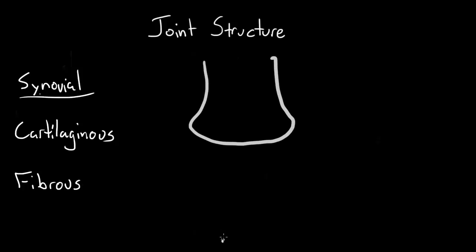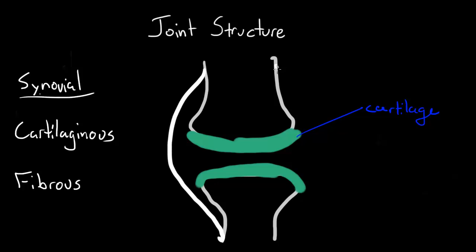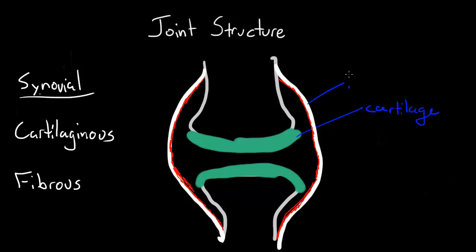Synovial joints are the most common type of joint in the body, and they allow the greatest degree of motion. The defining characteristic that makes a joint a synovial joint is that the bones aren't tightly bound together, but instead meet with surfaces lined with slippery articular cartilage. The area where the bones meet or articulate is contained within a stretchy bag called the articular capsule. The inner surface of the capsule is called the synovium, a layer of tissue that produces synovial fluid, which lubricates and nourishes the joint.